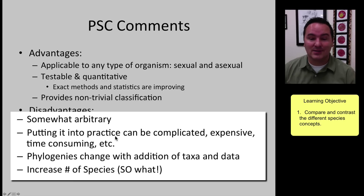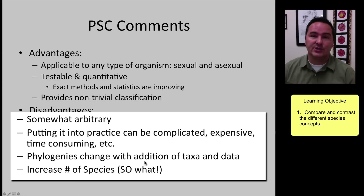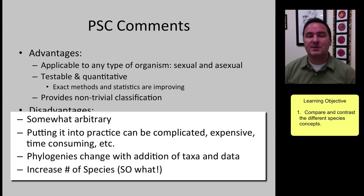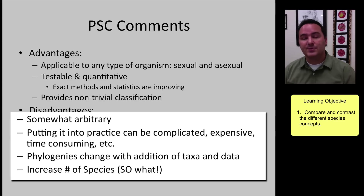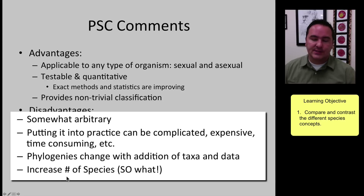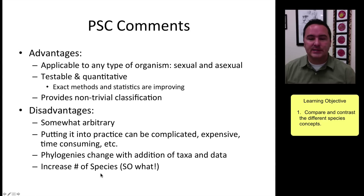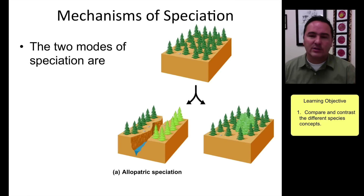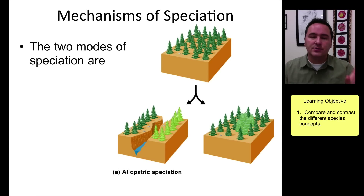The disadvantages are that it is still a little arbitrary — deciding where to draw the circles — though good methods are reducing this. Putting it into practice can be complicated, expensive, and time consuming. Phylogenies can also change as you add additional taxa or data, so the concept is constantly being revised, which changes what we call species.